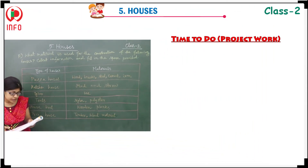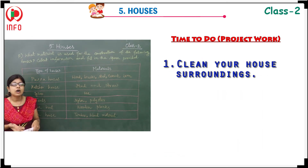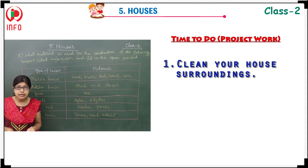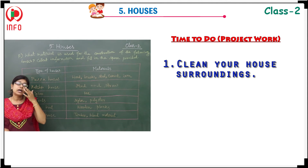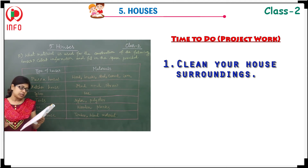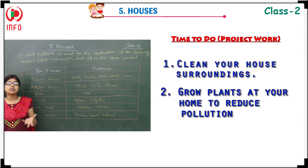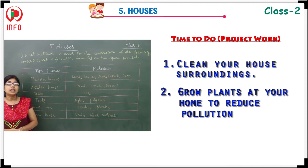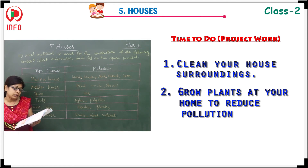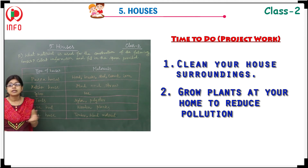Now it's time to do the project. First: clean your house surroundings. You should keep your surroundings clean — you can take help from your friends, neighbors, and elders. Remove whatever garbage is present there. Second: grow plants at your home to reduce pollution. Whatever pollution is there, you can reduce it with the help of plantation.